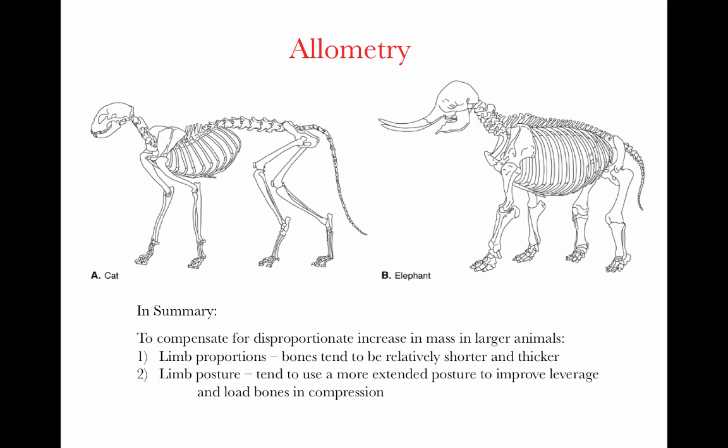In summary, to compensate for the disproportionate increase in mass in larger animals, we see changes in both limb proportions and limb posture. Bones tend to be relatively shorter and thicker, and muscles tend to be thicker. Larger animals also use a more extended posture to improve leverage and load their bones in compression rather than bending, compensating for that disproportionately large increase in mass.